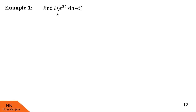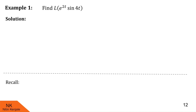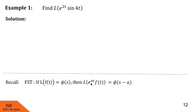We are asked to find Laplace of e raised to 2t into sin 4t. First, we will discuss the first shifting theorem, which says that Laplace of e raised to at into f of t is phi of s minus a, where phi is Laplace of f of t. To find this Laplace, first find Laplace of f of t, call it phi of s, then write the answer as phi of s minus a, where a is the coefficient of t in the power of e.